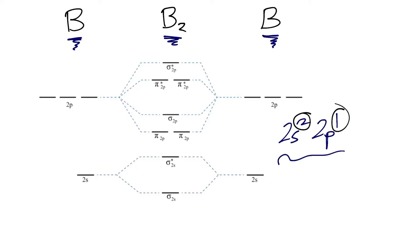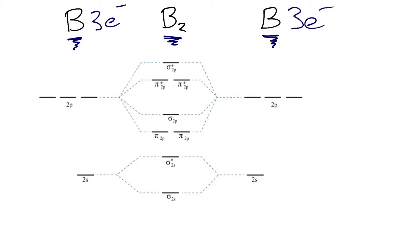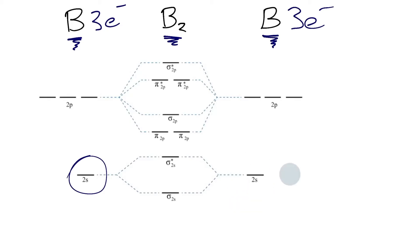Each boron atom has three electrons that it can use to make bonds, so we can now add these electrons into our molecular orbital diagram. We'll start with our 2s orbitals on the bottom, starting at the lowest energy level and adding those electrons in first. The 2s orbitals can each hold two electrons, and we do that for both atoms.